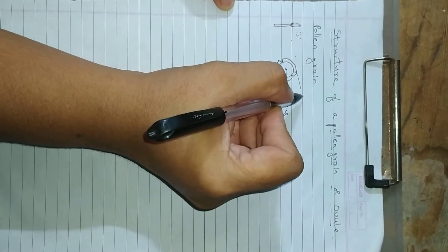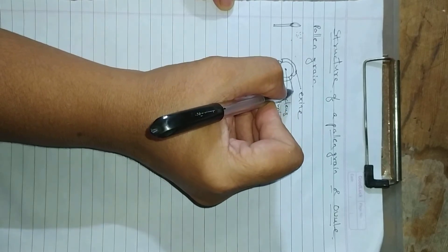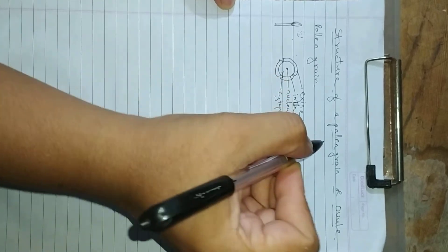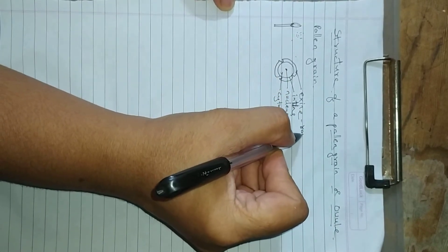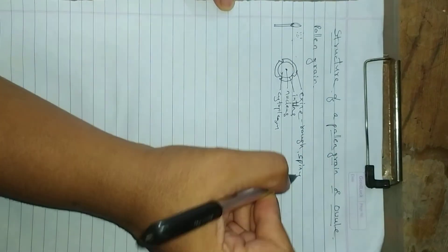This is the outer layer called as exine. Inner layer called as intine. Exine is generally rough, sometimes it is spiny.